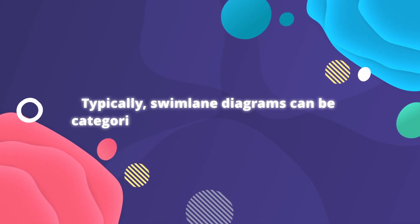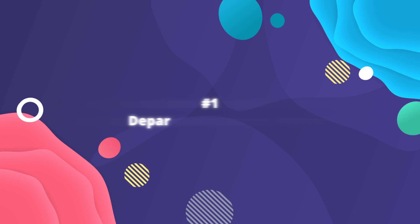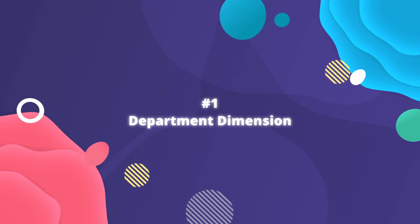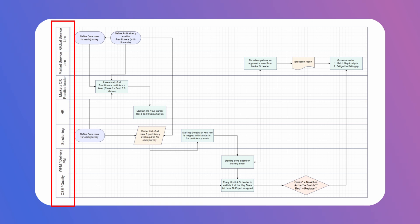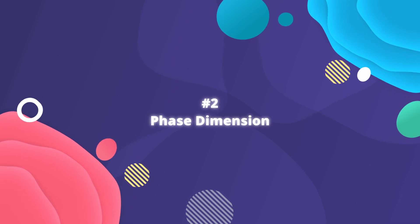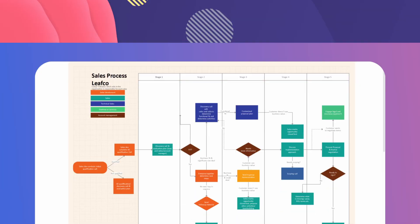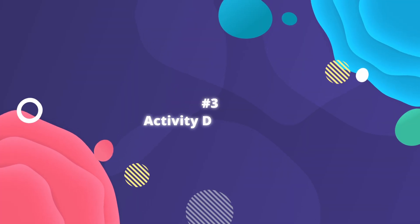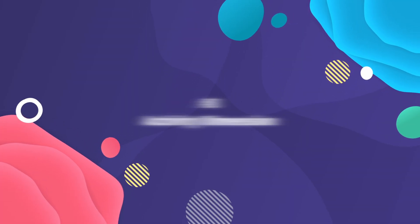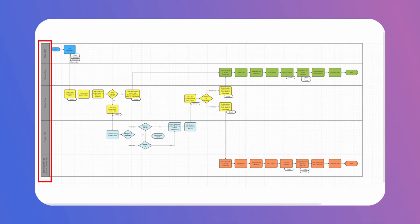Typically, Swimlane diagrams can be categorized based on three dimensions. Number one, the department dimension — this organizes lanes by departments or roles, clearly indicating the tasks each department or individual is responsible for. Number two, the phase dimension — this categorizes lanes by different stages of the process. And number three, the activity dimension — in each phase, every activity within a grid is linked to a corresponding department or role to ensure accountability.